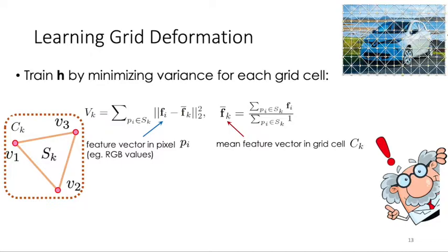It can be RGB values. And when we have supervision, such as segmentation mask, we can append one hot vector to RGB values. And f hat is the mean feature vector of grid cell k. Sk here denotes the set of pixels that are inside grid cell k.